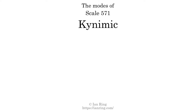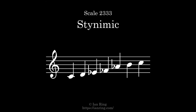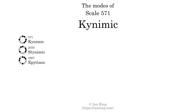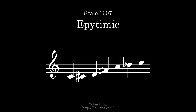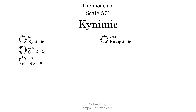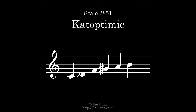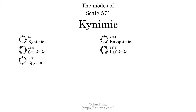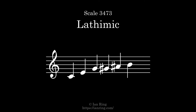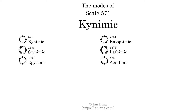This scale has six modes. The first mode is itself. The second mode is scale 2333, also known as dynamic. The third mode is scale 1607, also known as epitemic. The fourth mode is scale 2851, also known as cataptemic. The fifth mode is scale 3473, also known as lithemic. The sixth and last mode is scale 473, also known as aerolimic.